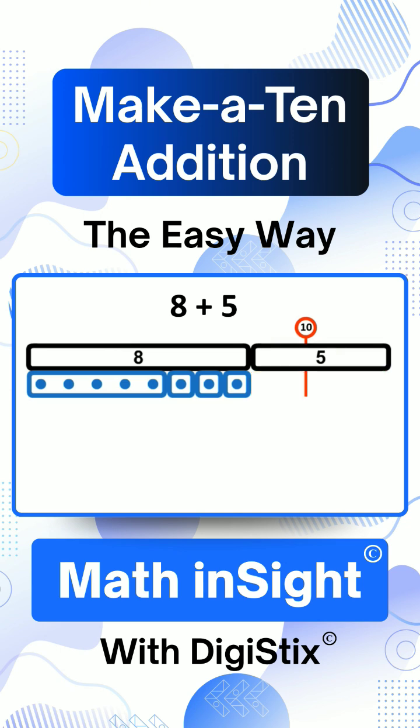There's an easy way to remember this method for addition. We decompose 5 into 2, the 10-pal for 8, and 3, the number over 10. And we make a 10 by adding 8 and its 10-pal, which is 2.